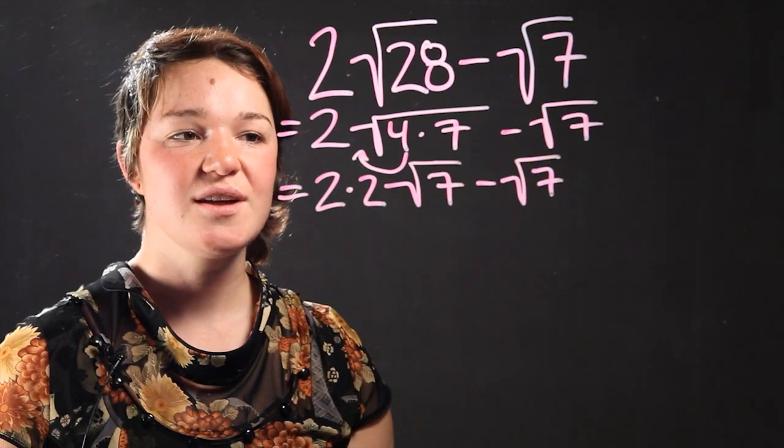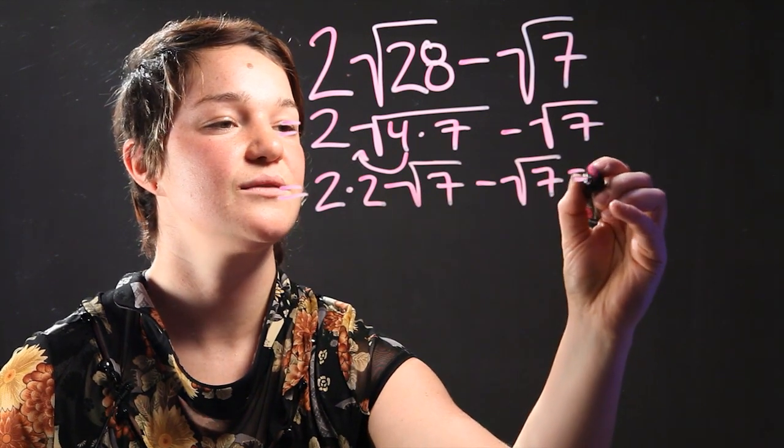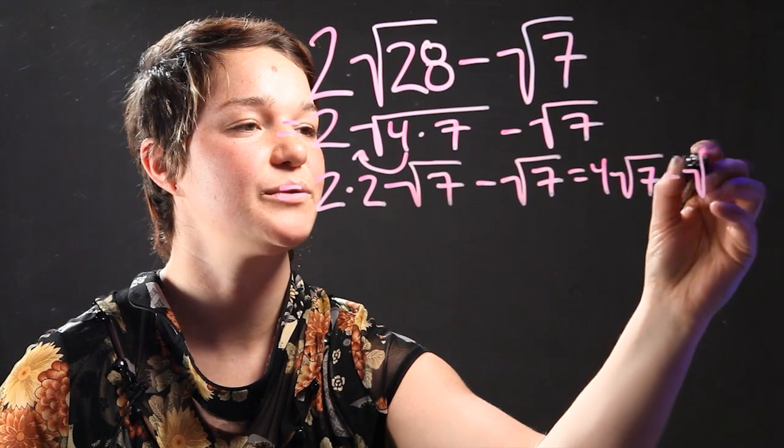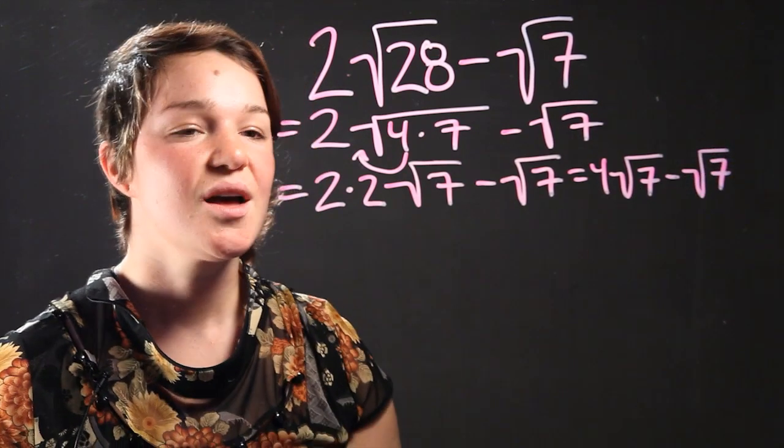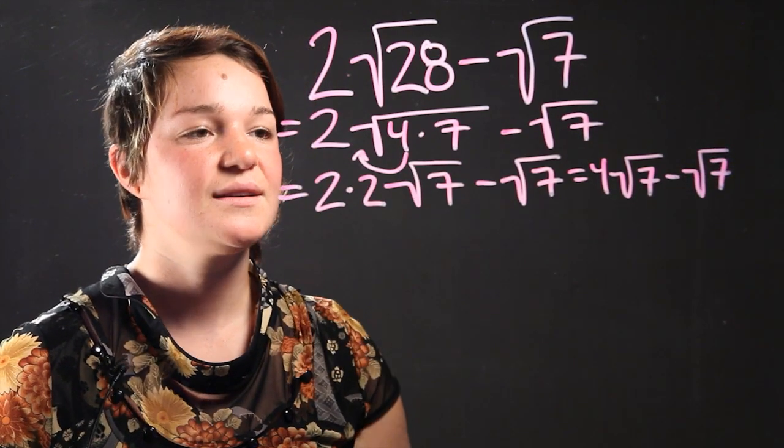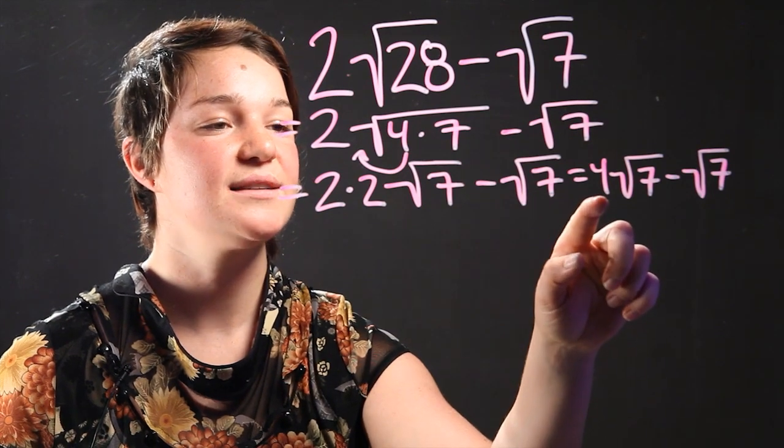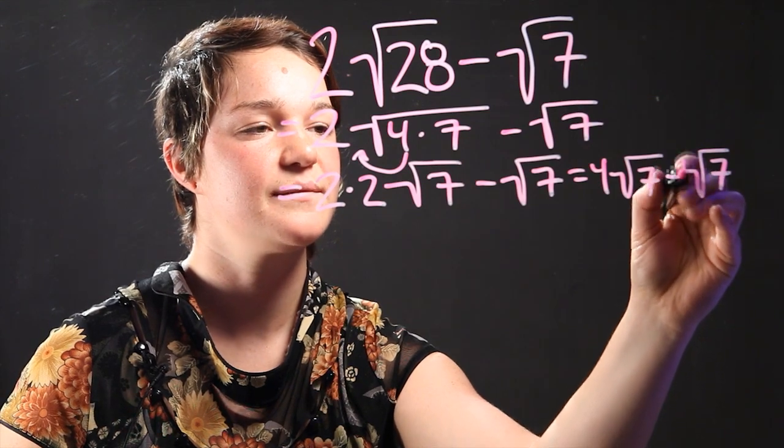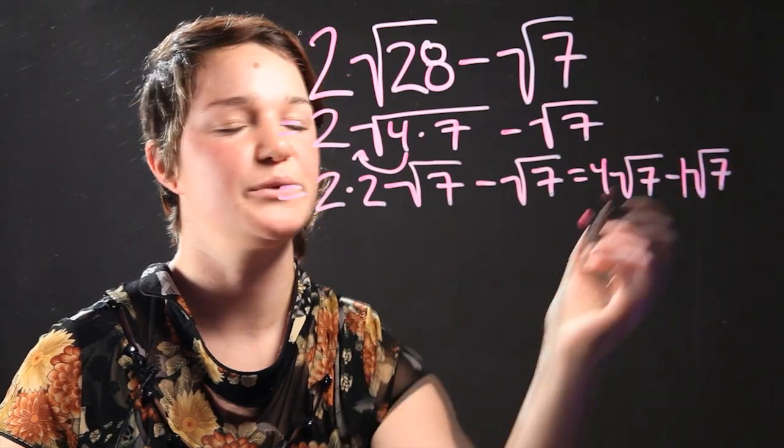So to simplify this, we realize that it's 4 square root of 7 minus square root of 7. The way to do that is to subtract 4 minus 1. The exponent in front here is 1. It's 1 times the square root of 7.